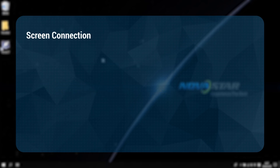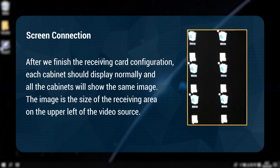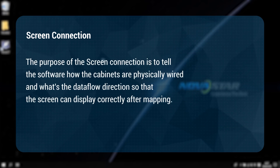After we finish the receiving card configuration, each cabinet should display normally and all the cabinets will show the same image. The image is the size of the receiving card area on the upper left of the video source. The purpose of the screen connection is to tell the software how the cabinets are physically wired and what is the data flow direction, so that the screen can display correctly after mapping.